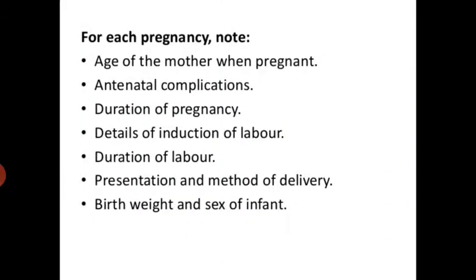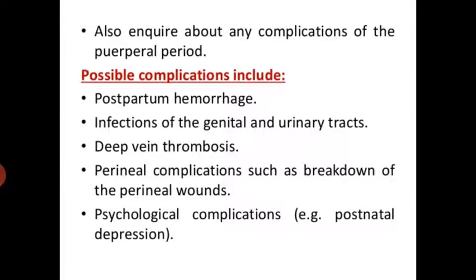For each pregnancy, record: age of mother when pregnant, antenatal complications, duration of pregnancy, details of induction of labour, duration of labour, presentation, method of delivery, birth weight and sex of infant. Also inquire about any complications of the puerperal period, including possible complications such as postpartum hemorrhage, infection of the genitourinary tract, deep vein thrombosis, and perineal and psychological complications.